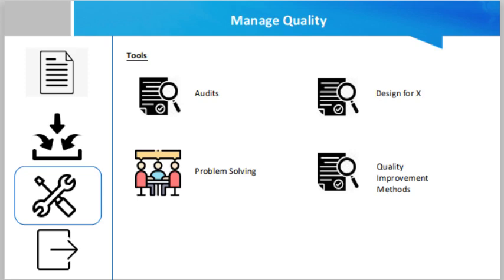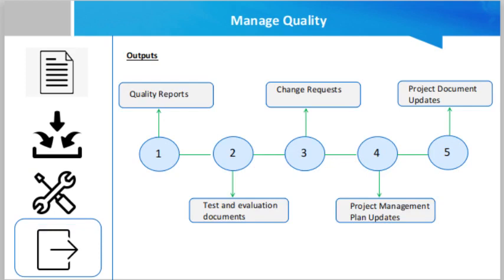Now the outputs: the first output is quality reports. The information contained in the quality reports is used by the project team to take corrective actions on either the processes or the product. This information may include quality management issues, recommendations for corrective actions, and a summary of findings.